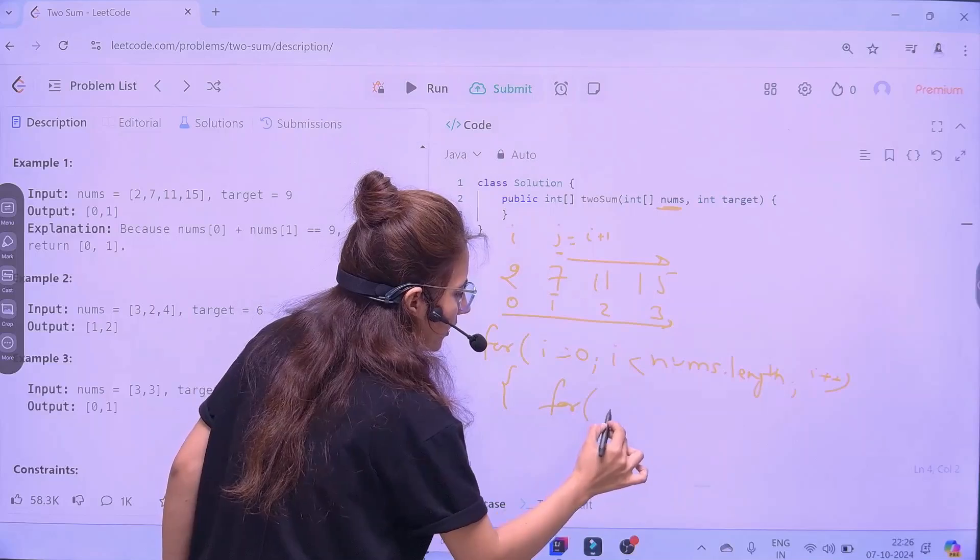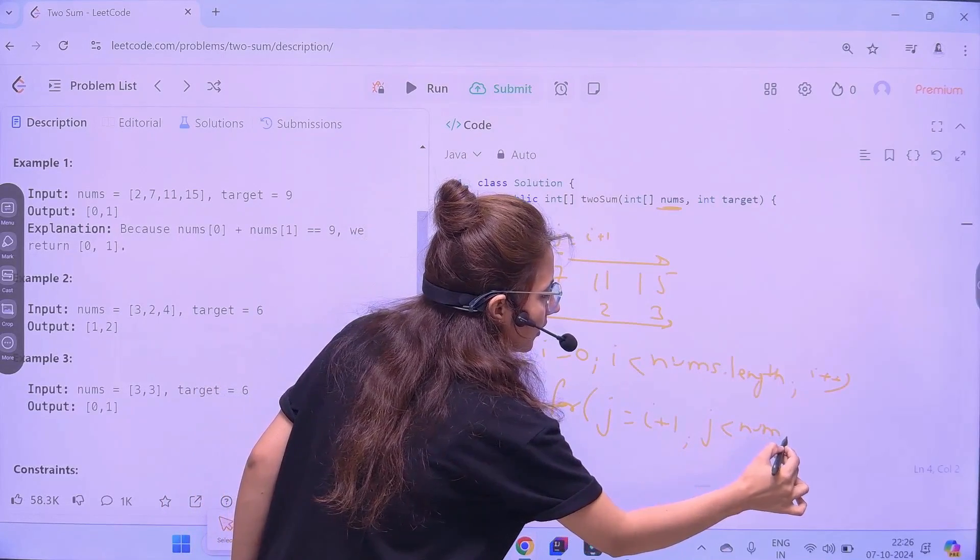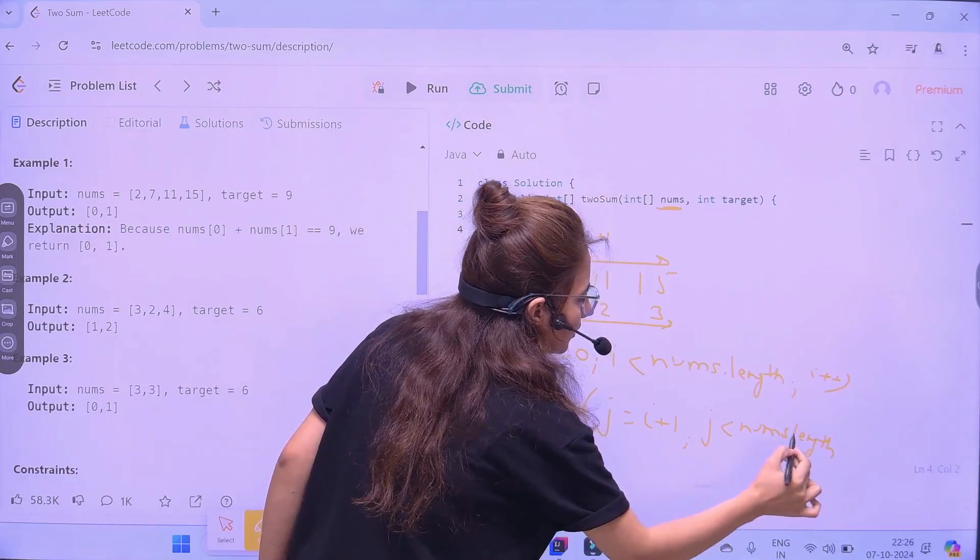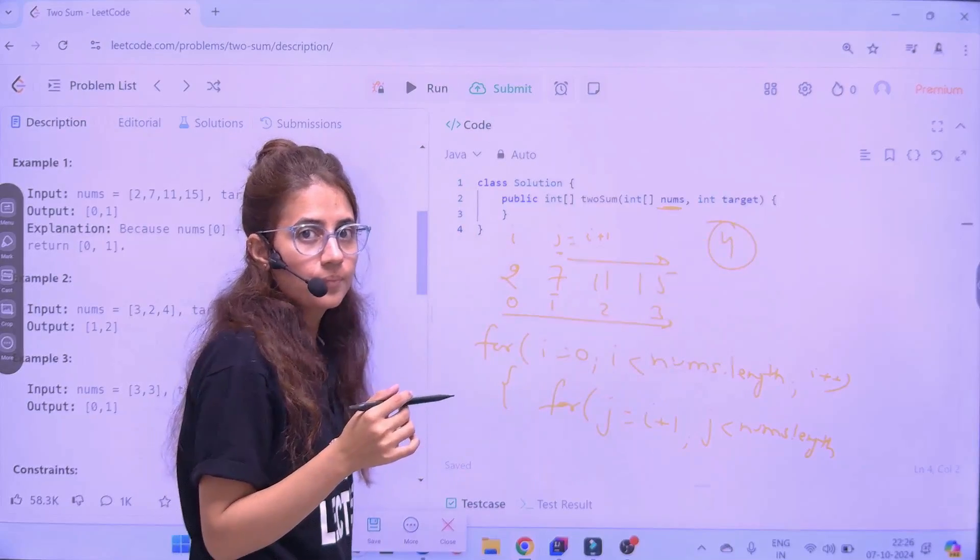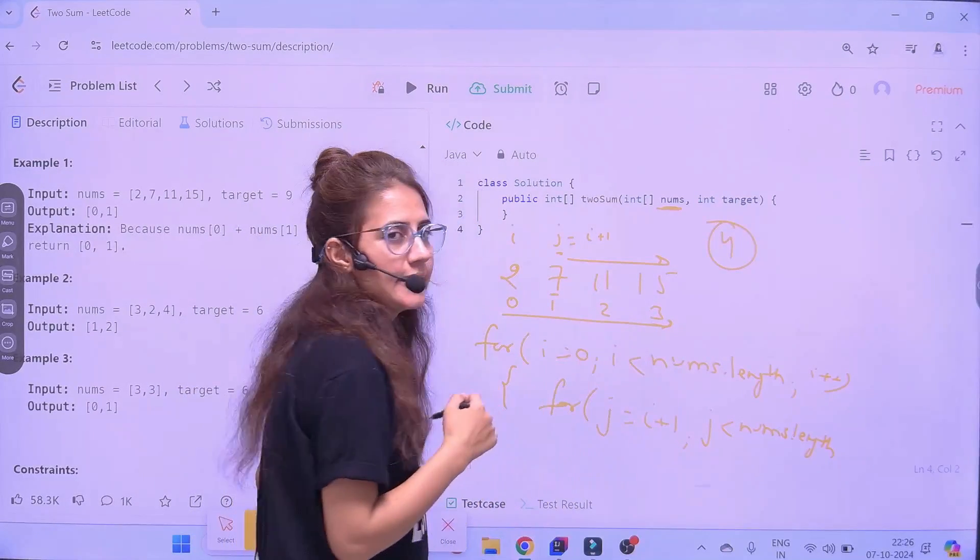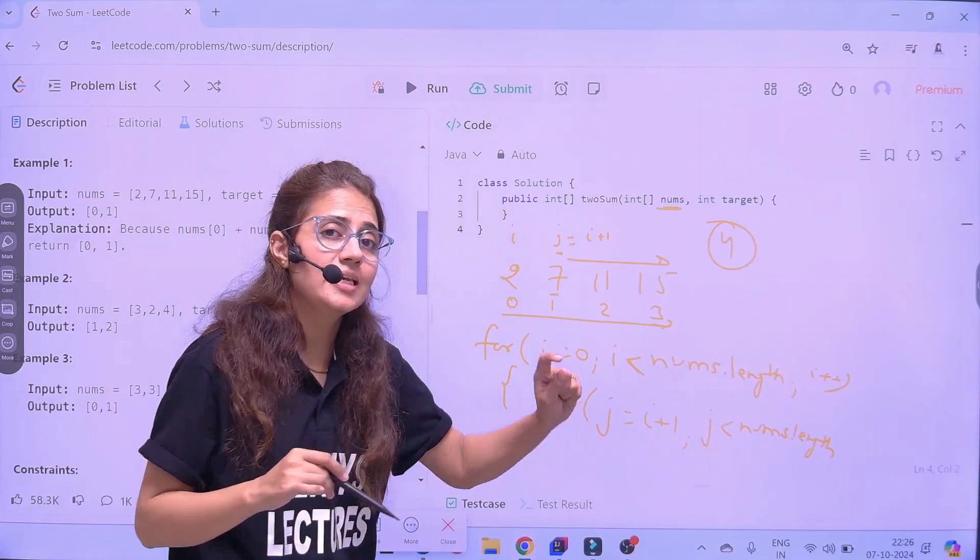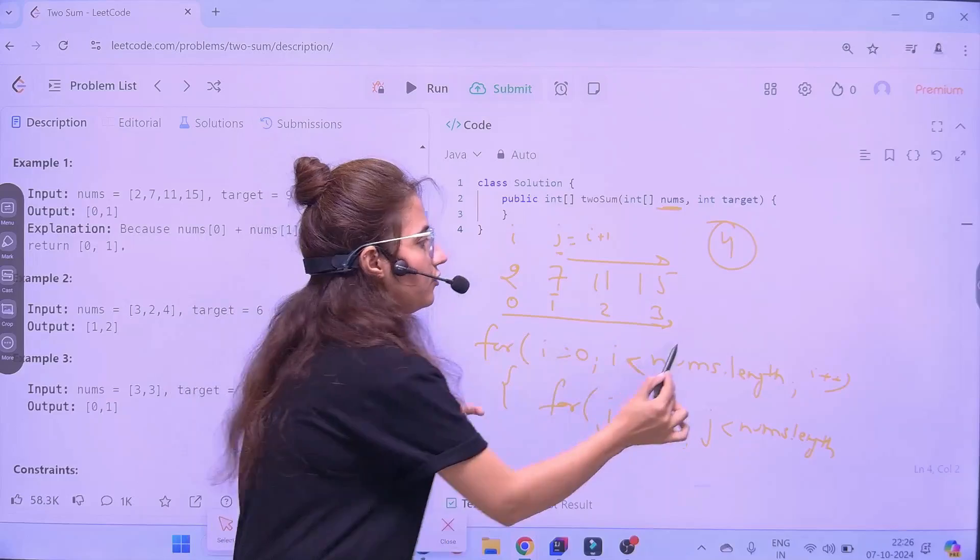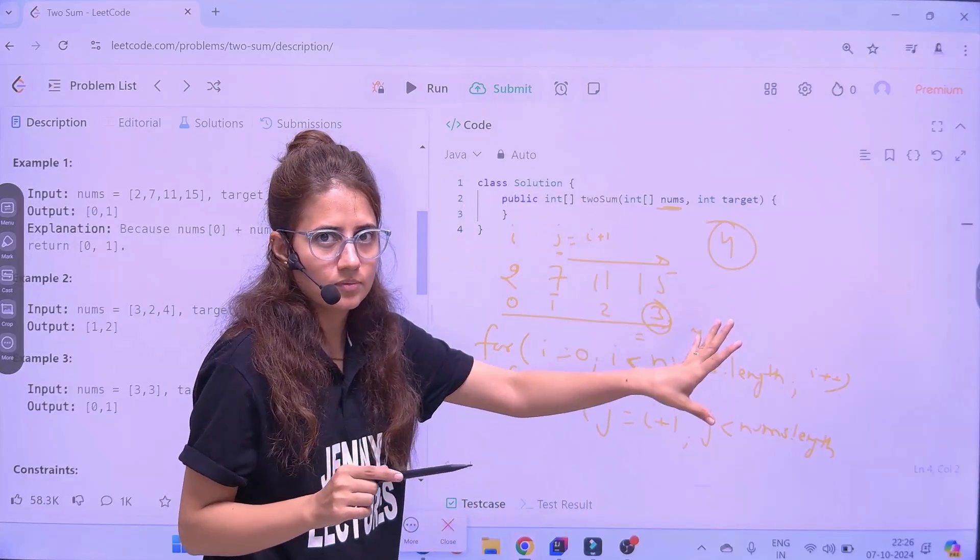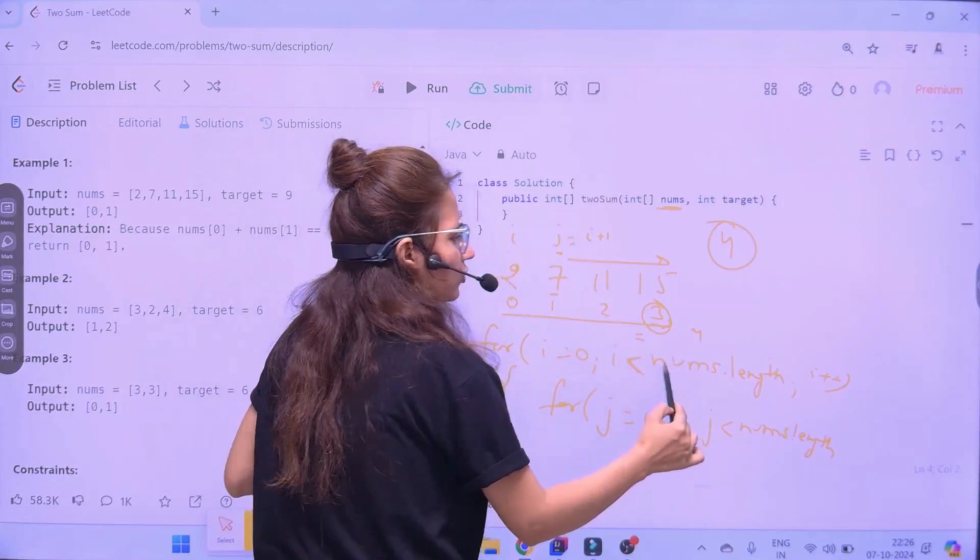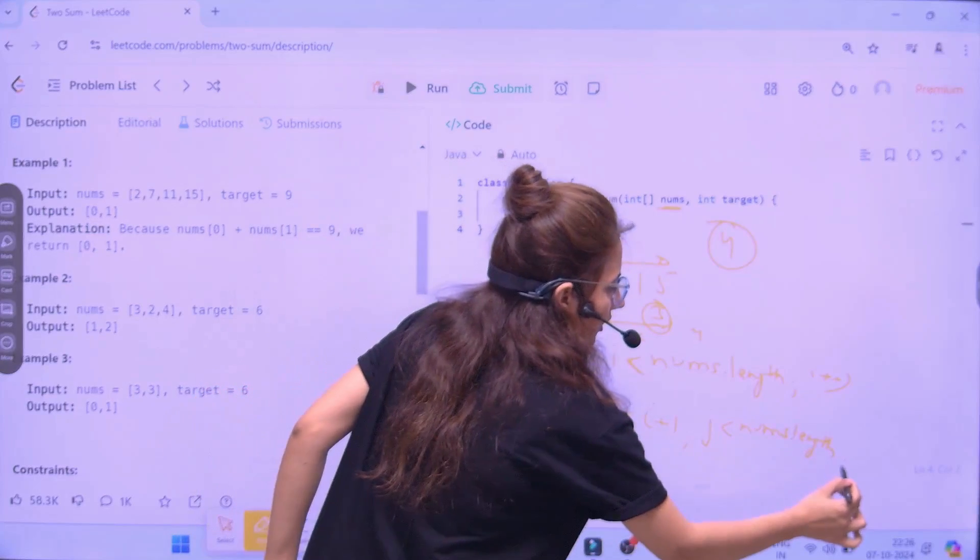Within this, one more for loop. That is, j is equal to i plus 1. And, j is also nums dot length. See, length would be 1, 2, 3, 4. Length would be how many total elements? 4. But, we want to move till 3. 3 index. So, that is why I am writing here. Less than nums dot length. Not less than equal to. Less than 4. Not less than equal to 4. Because, we want to move till 3 only. Not 4.